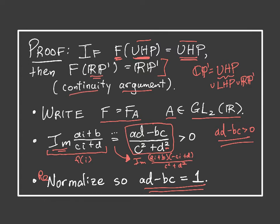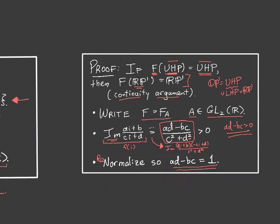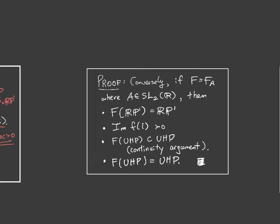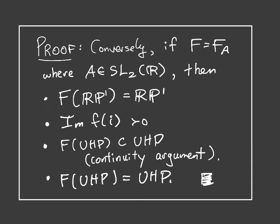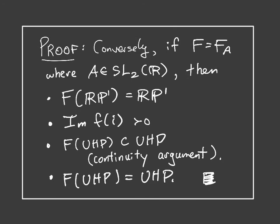Therefore every f that maps the upper half plane onto itself can be represented with a matrix from SL2R. Now let's look at the converse. Conversely, if I have a fractional linear transformation represented with a matrix in SL2R, then by our previous material it has to send RP1 onto RP1.